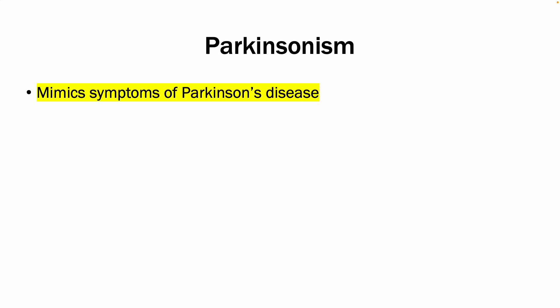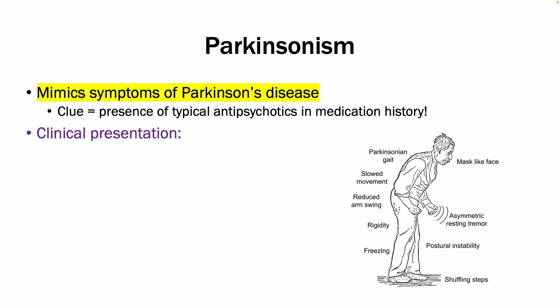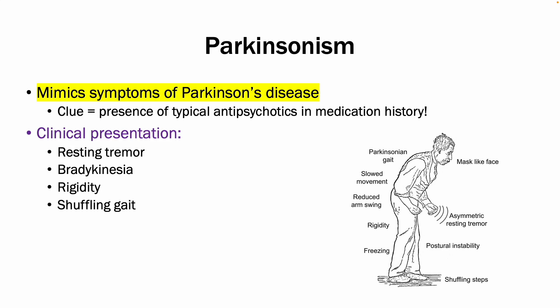The second extrapyramidal symptom is parkinsonism, which mimics symptoms of Parkinson's disease. It is a clue in a question when a patient on typical antipsychotics starts presenting with a resting tremor, for example. You get symptoms such as resting tremor, bradykinesia, rigidity, and shuffling gait, which are very typical of Parkinson's disease, but the key difference is that parkinsonism is caused by the medication rather than an underlying pathology.